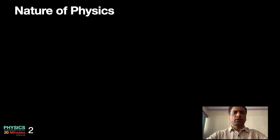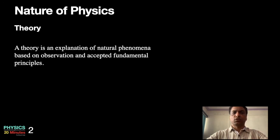So what is the nature of physics? How does physics work or is it explained? Physics basically believes in theorizing. It makes a theory of things, theory of the observed fact. What is a theory? A theory is an explanation of natural phenomena based on observation and accepted fundamental principles.